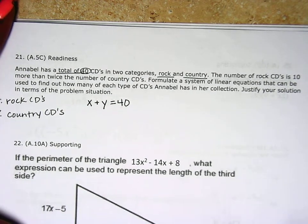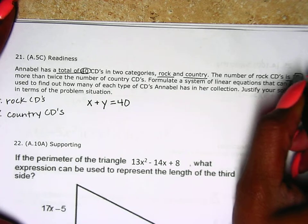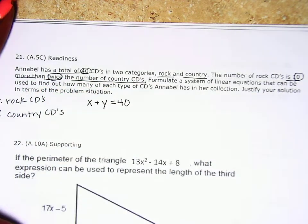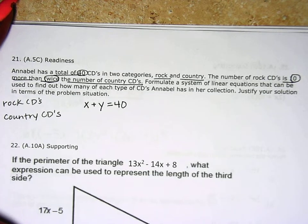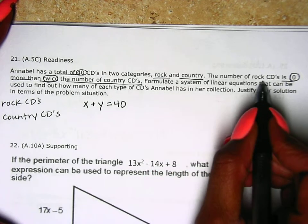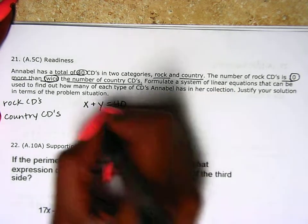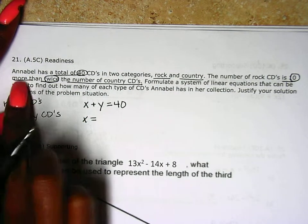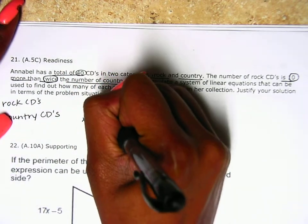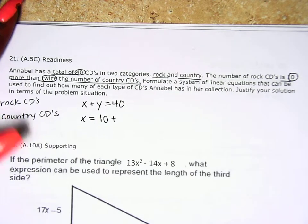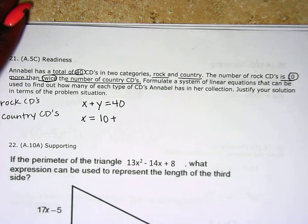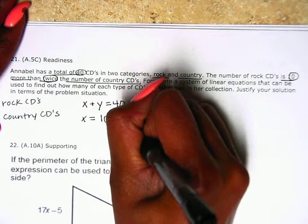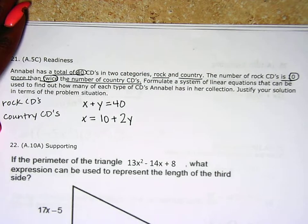Next it says, the number of rock CDs is 10 more than twice the number of country CDs. So let's read that again and as we're reading it, let's write it. The number of rock CDs, which is X, so X is 10 more than—whatever it is, we're going to add 10 to that—10 more than twice the number of country CDs. So however many country CDs she has, we're going to do twice that number.